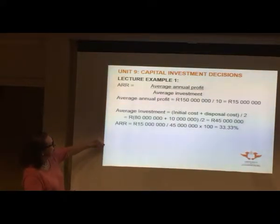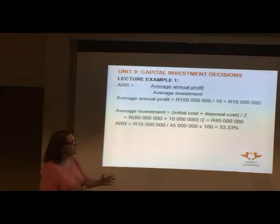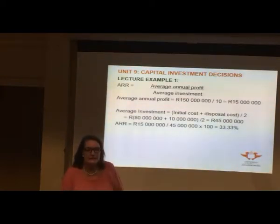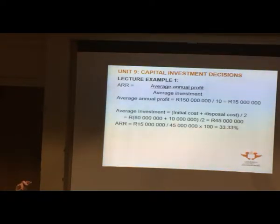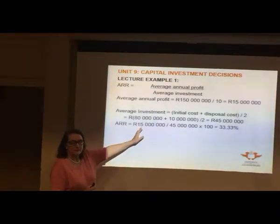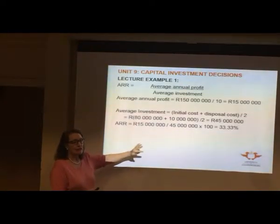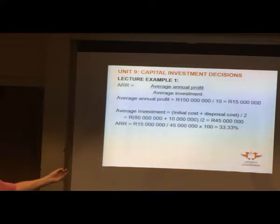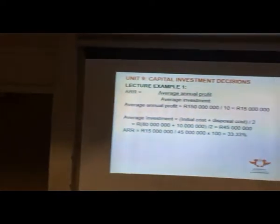The average investment is 45 million because it's 80 million plus 10 million equals 90 million divided by 2. So the accounting rate of return is 15 million divided by 45 million times 100, which is 33.33%. If the company's target is 18% or 20%, you'd invest — this is a good rate of return. But if your ARR came out at 12% against a target of 20%, you would not invest because you'd be losing money.